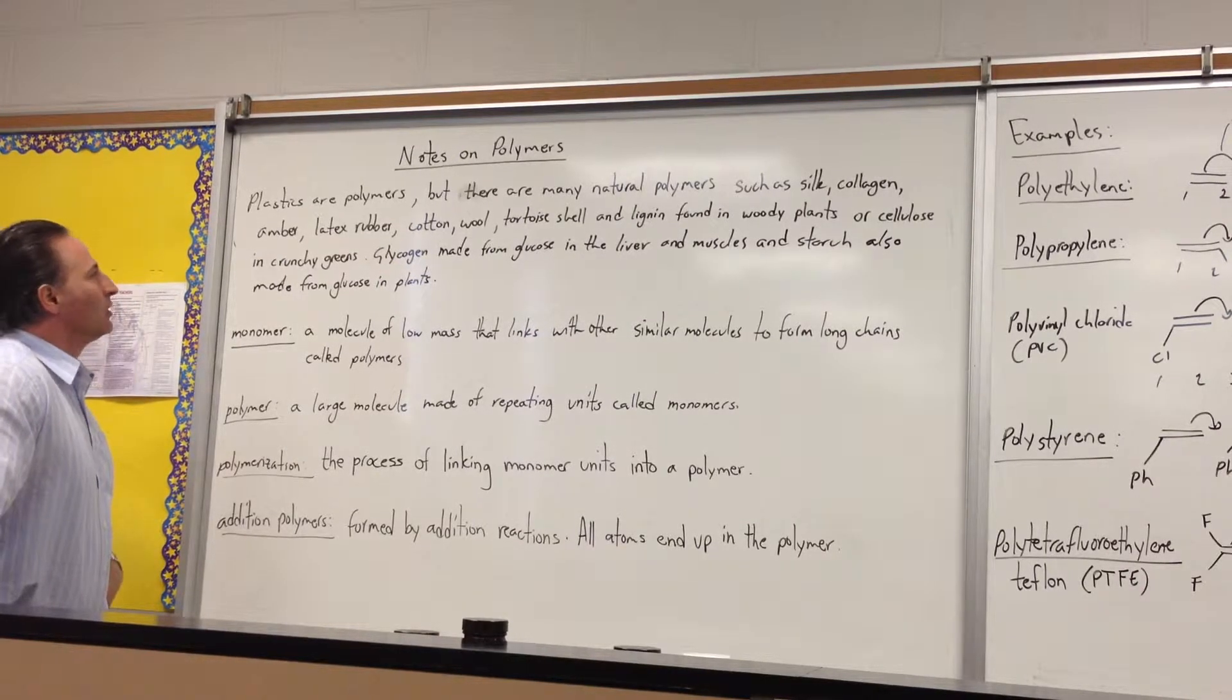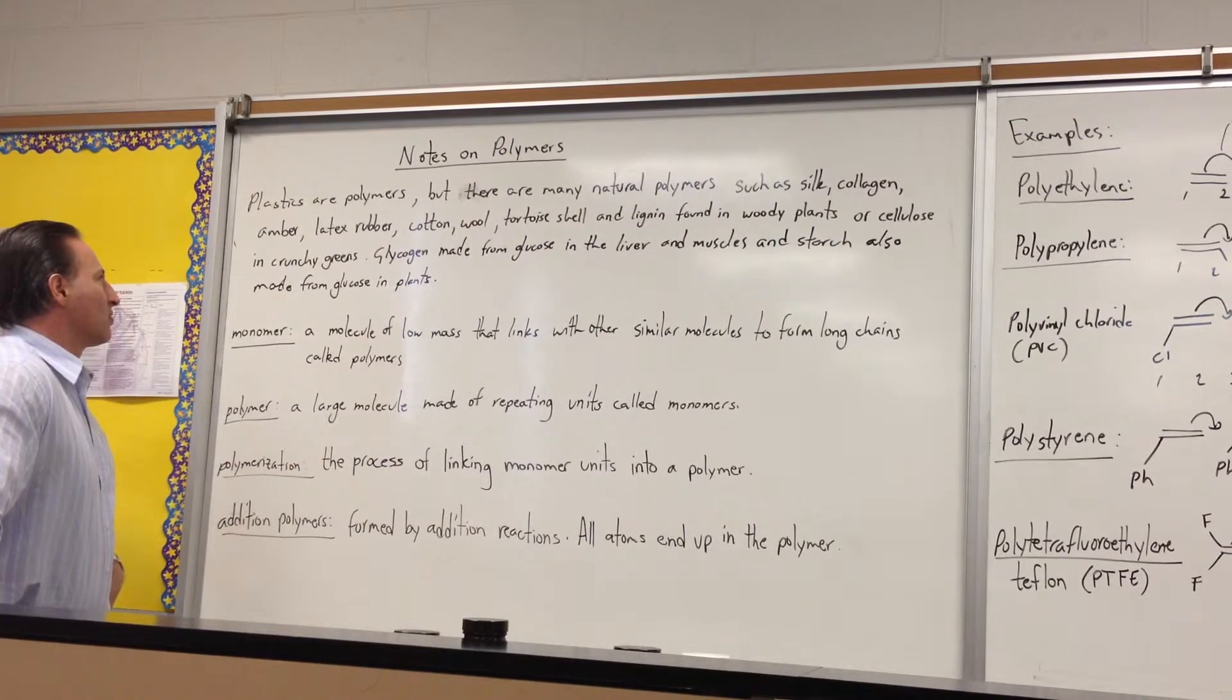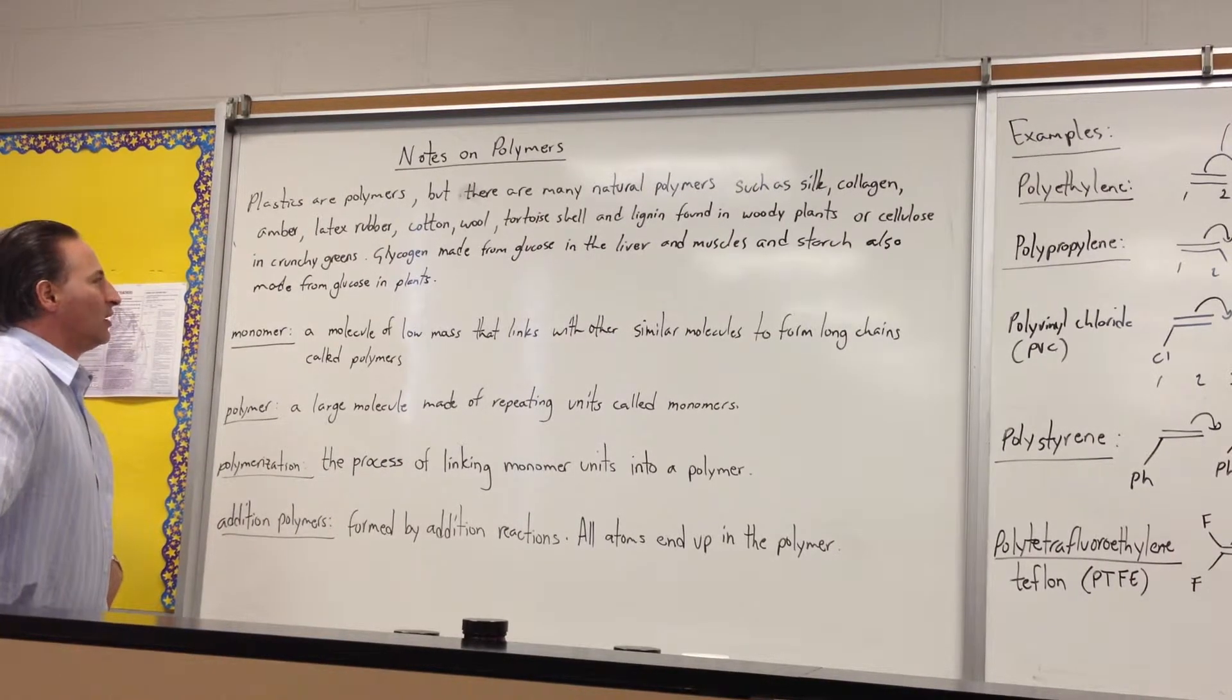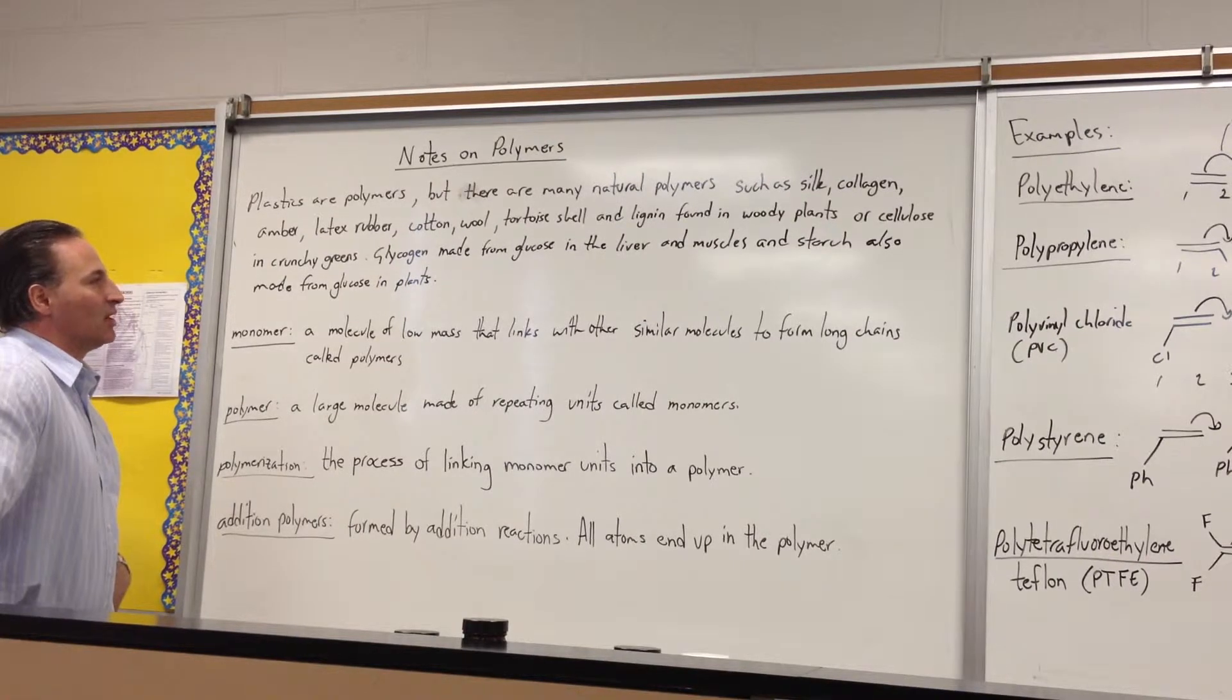Collagen, amber, latex rubber, cotton, wool, tortoiseshell, and lignin found in woody plants, or cellulose in munchy greens, or glycogen made from glucose in the liver and muscles, and starch also made from glucose in plants.